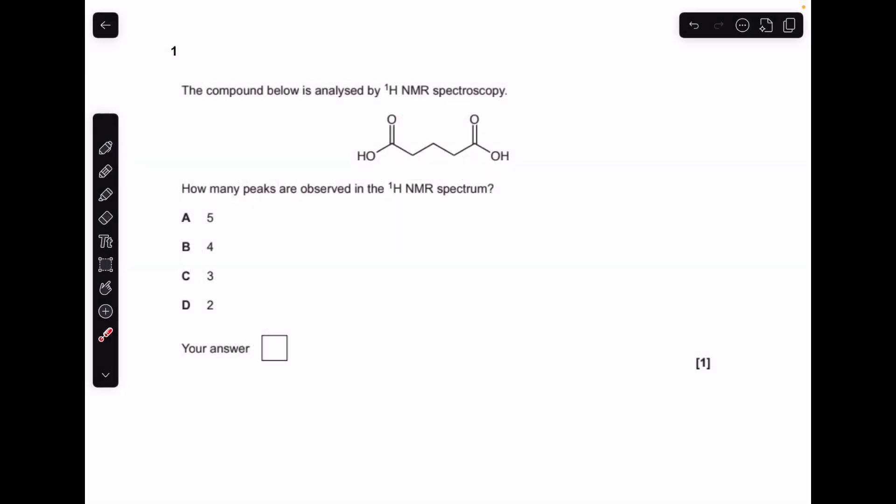Okay, so we'll make a start. To answer this one, we need to see if there are any lines of symmetry in the molecule, and there is this one here right down the middle, so that means the hydrogens either side of the line of symmetry that are equidistant from each other will be equivalent, so we've got one, two, three different environments, so the answer was C.